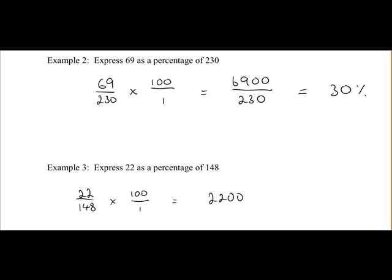22 by 100 is 2200. 148 by 1 is 148. So when we divide 2200 by 148, we get an answer of 14.86%. So 22 is 14.86% of 148.